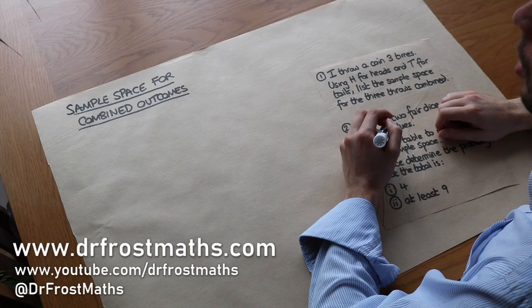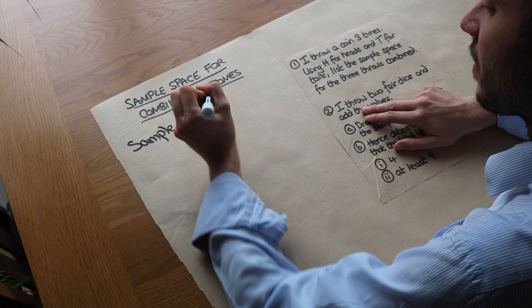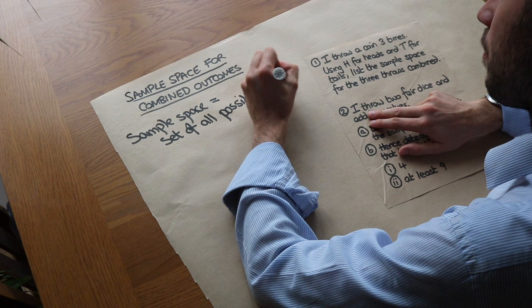Hello and welcome to this video on sample spaces or combined outcomes. Just to define what I mean by sample space first: sample space just means the set of all possible outcomes, and by the word set I just mean the kind of collection effectively.